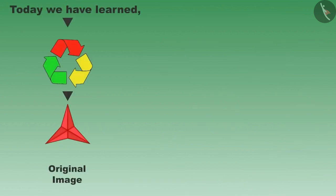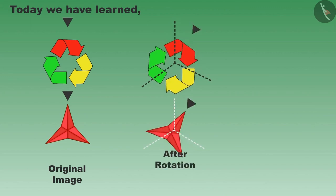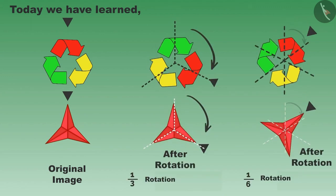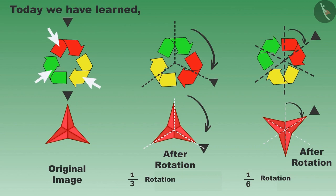Children, in this video we learned that while rotating an image by one-third or one-sixth, you should focus on the color and the shape of different parts. It is not necessary that we will get the original shape after one-third or one-sixth rotation. Thank you.